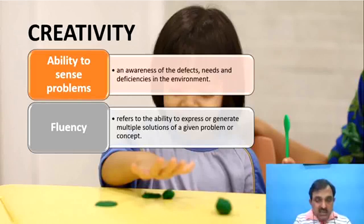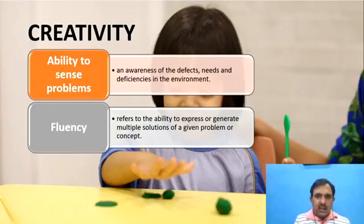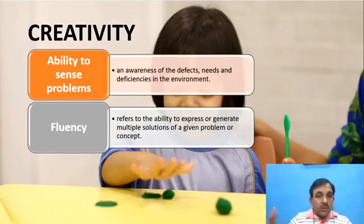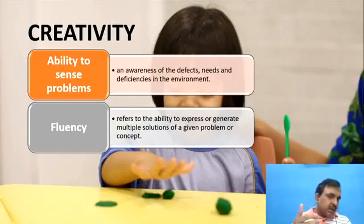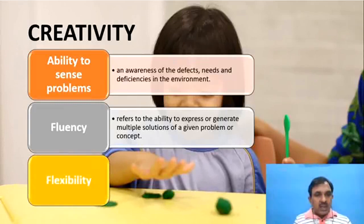आपकी ability कि आप कितनी तेजी से जो defect, जो need, जो deficiency आपने identify की है, जो समस्या आपने पहचानी है, उसके multiple solutions को generate करना या उसकी संभावनाएं generate करना — इसकी ability यह second dimension है। Then flexibility,